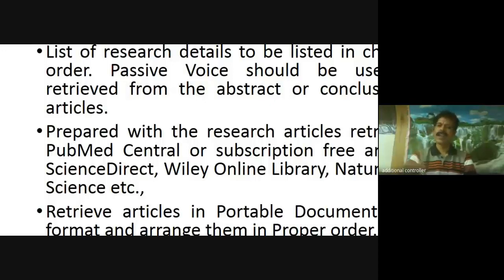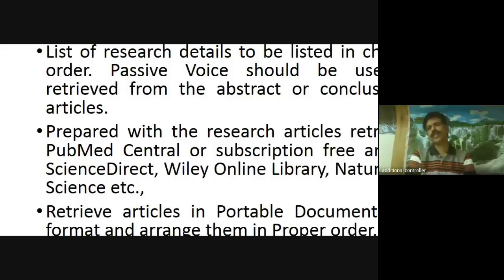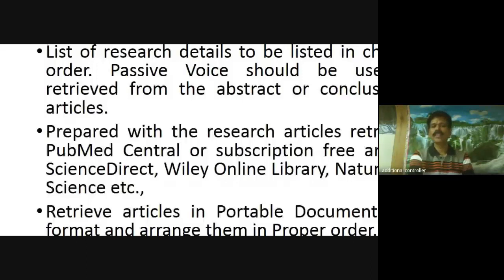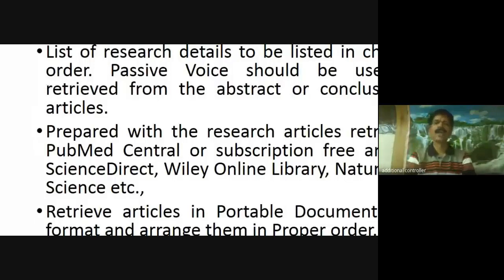So for the literature, you can collect the journal articles. You can avoid book references. In the introduction, there is a website. You can get the review of literature. You can list the journal articles in chronological order. Now there are three works — one work in 1970, one work in 2000, one work in 2005.